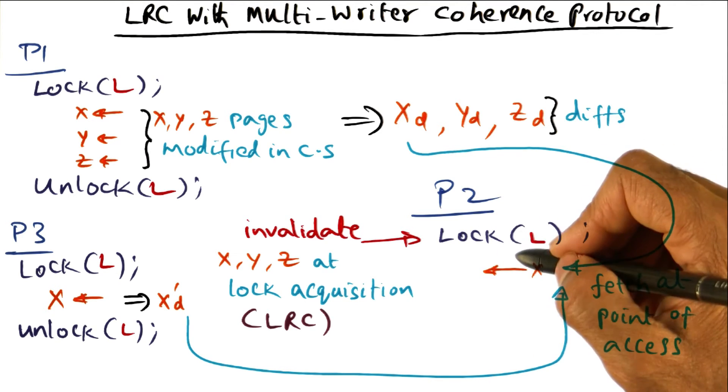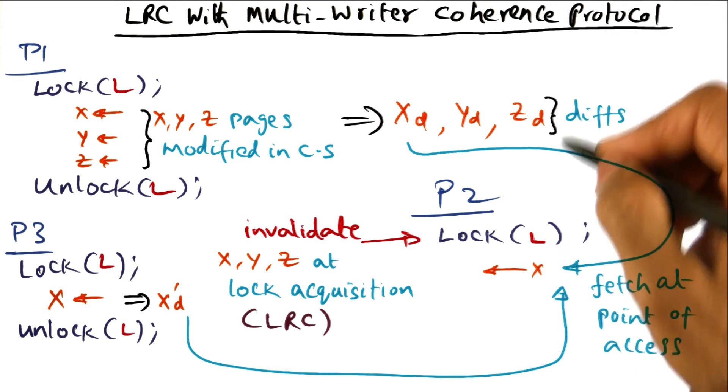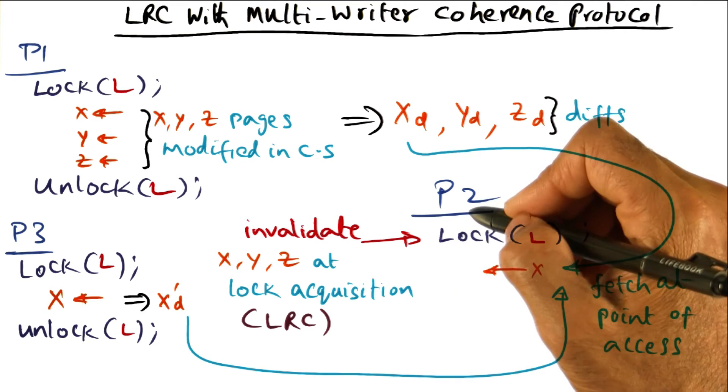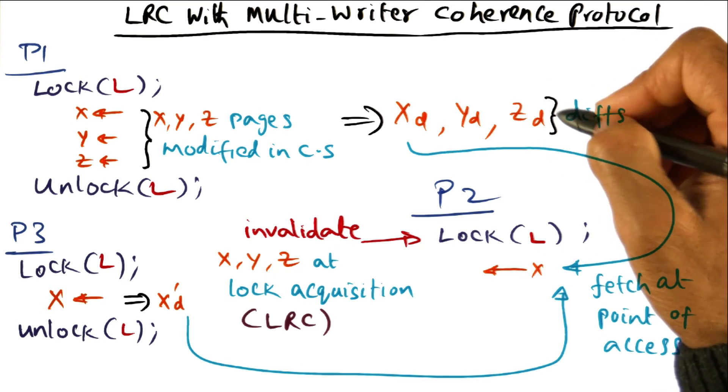So for instance, inside this critical section, maybe only x is accessed. Y and z are not accessed at all. In which case, we never bring the diffs from P1 to P2 for y and z.